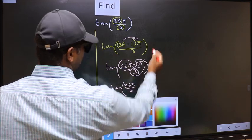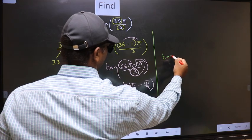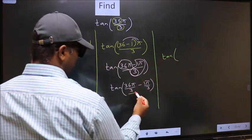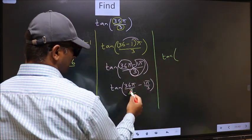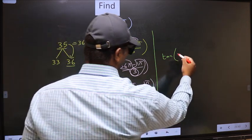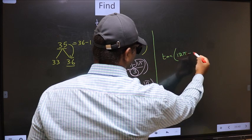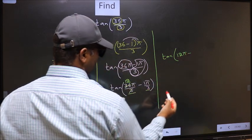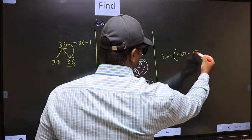Next, tan. Now here we should cancel. 3 once, 3 twelve times. So we get 12π minus this, no change, 1π by 3.